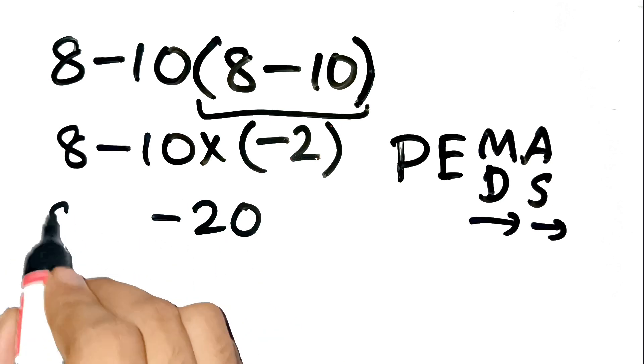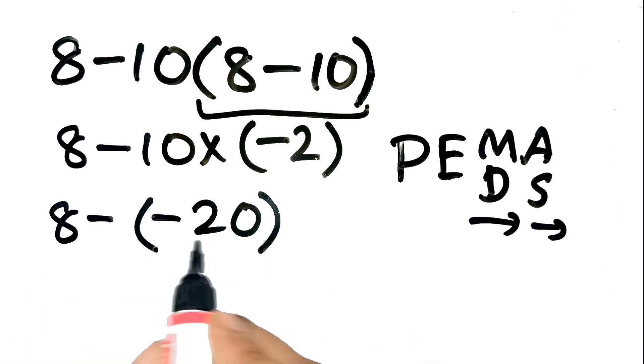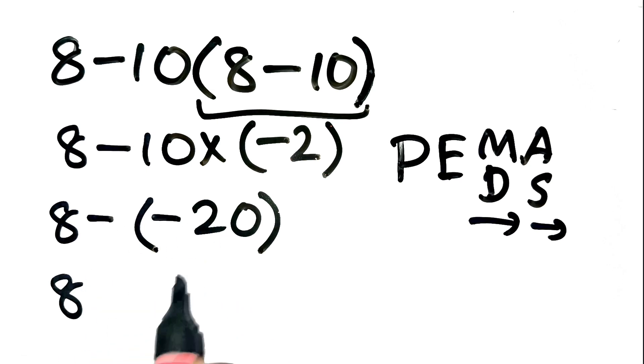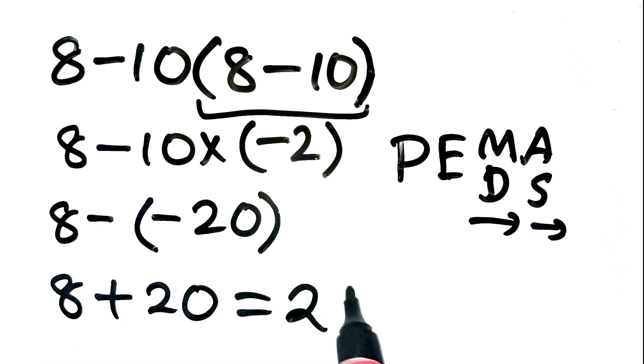Now the expression becomes 8 minus negative 20. And we all know that subtracting a negative is the same as adding a positive. So 8 minus negative 20 turns into 8 plus 20, which equals 28.